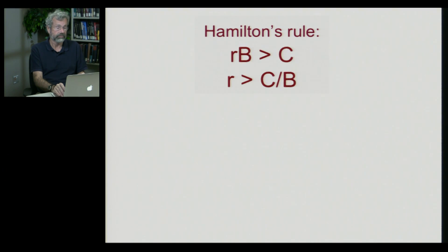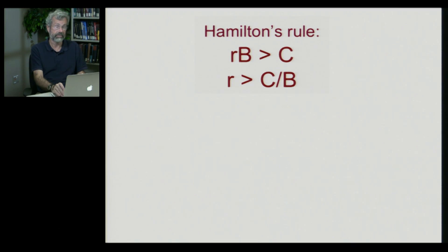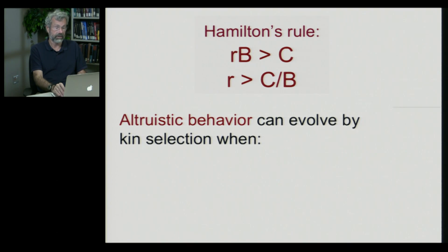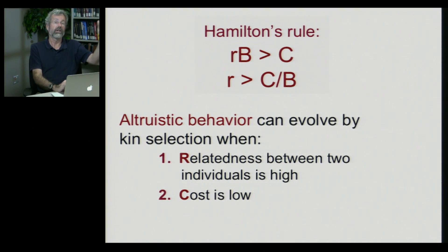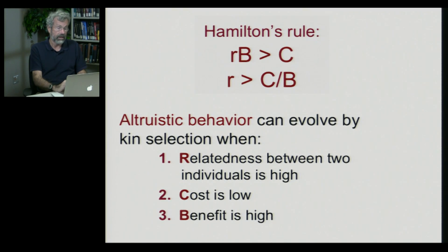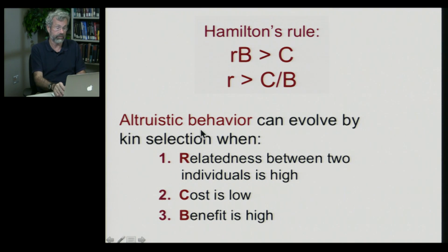With Hamilton's rule, we can rearrange this: as long as R times B is greater than C, we can look at the ratio of cost to benefits and say that as long as the coefficient of relatedness is greater than C divided by B, that's when you should be nice to somebody. Altruistic behavior can evolve by kin selection when relatedness between two individuals is very high — the larger R is, the more likely the inequality will be met. Also, when the cost is very low, you can easily confer benefits to relatives at no cost to yourself. Or when the benefits are extraordinarily high — it may be costly for me to help you, but if you'll have a ton of new offspring, it would be worth it, provided I am your close relative.